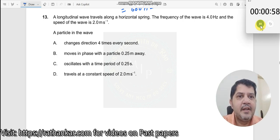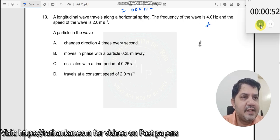Question number 13. A longitudinal wave travels along a horizontal spring. The frequency of the wave is 4 hertz. Frequency is given. So, progressive wave and the speed of the wave is 2 meters per second. V is given.